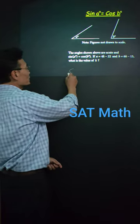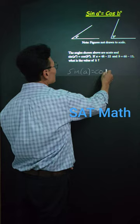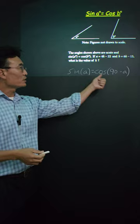For this SAT math question, we need to first know that sine of A is equal to cosine of 90 minus A, since sine and cosine are complementary to each other.